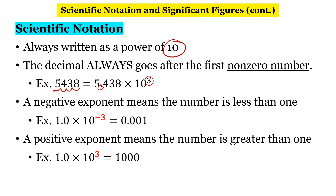A negative exponent means the number is less than 1. You may have learned this as moving the decimal place to the left or to the right. If you see a negative exponent, that means we're moving the decimal place to the left. So in this example, 1.0 times 10 to the negative third means we're moving that decimal place to the left three times.